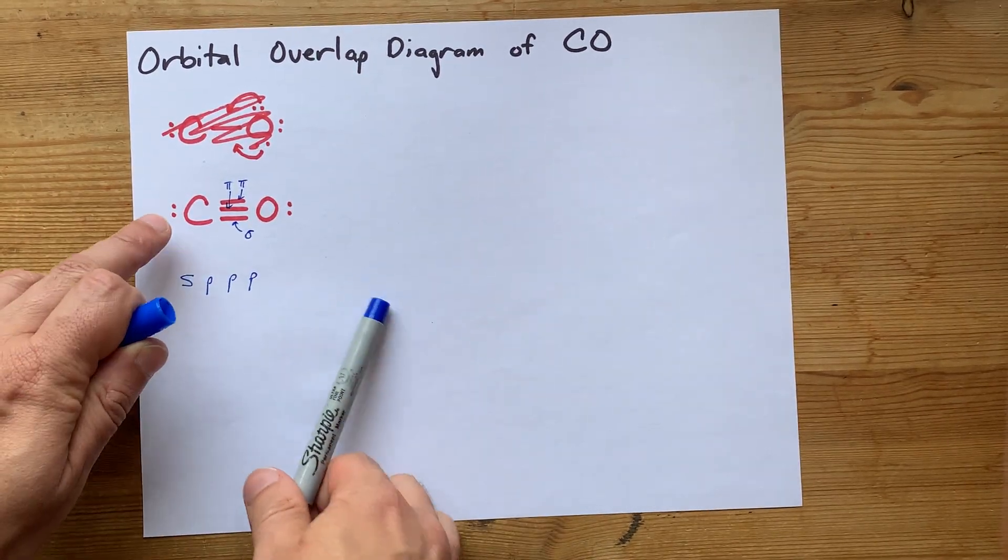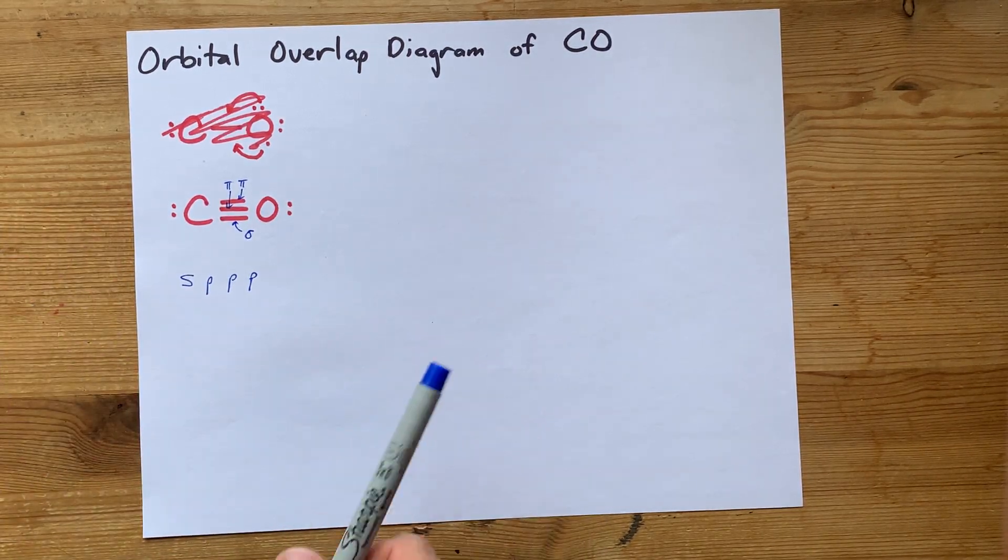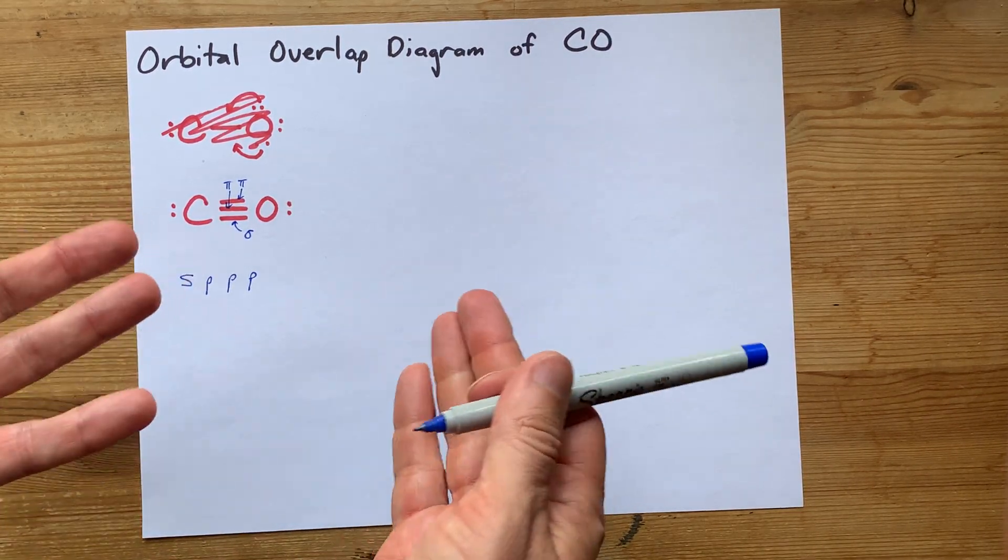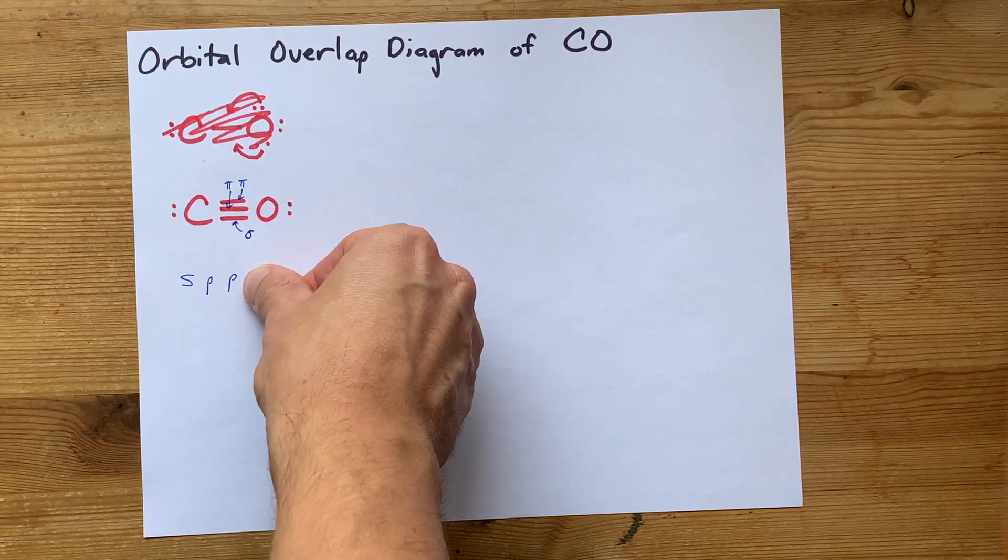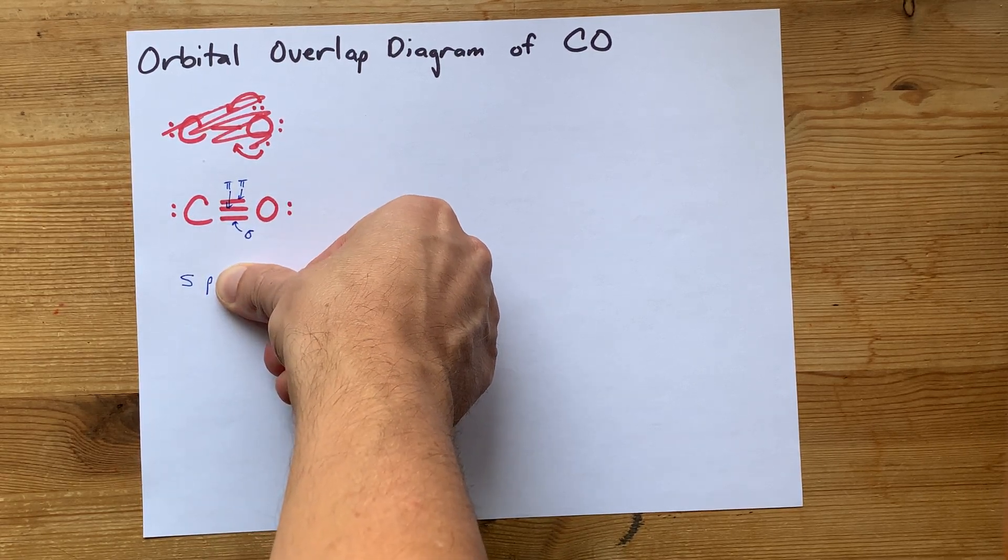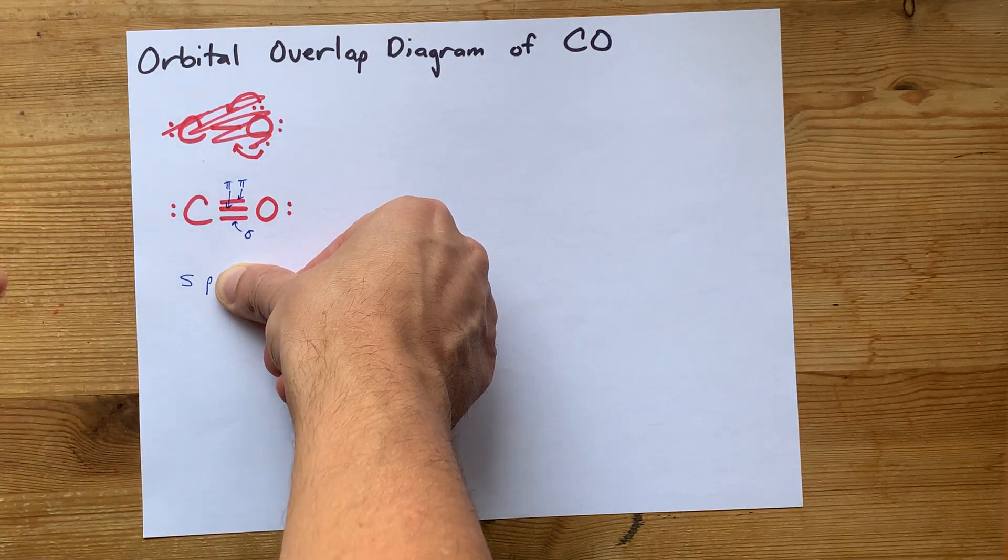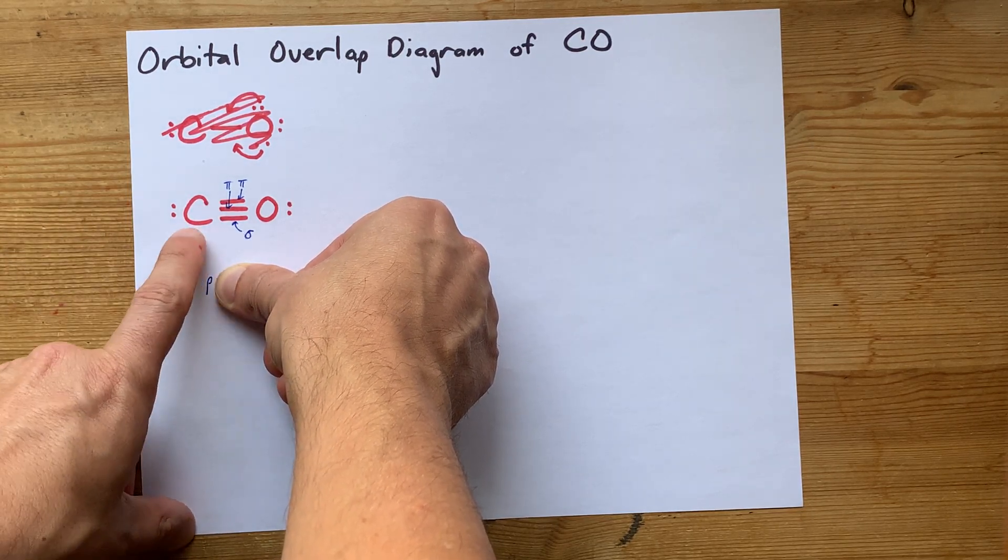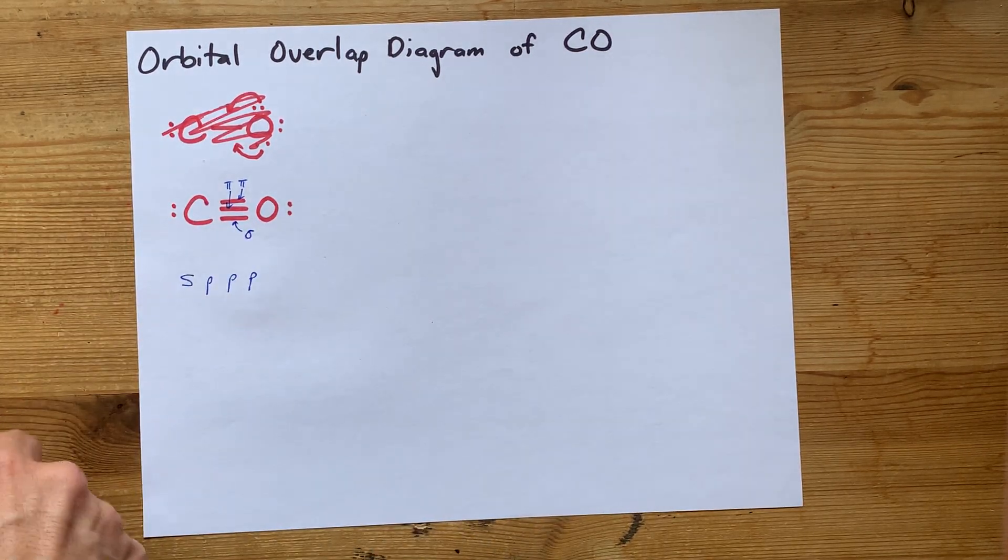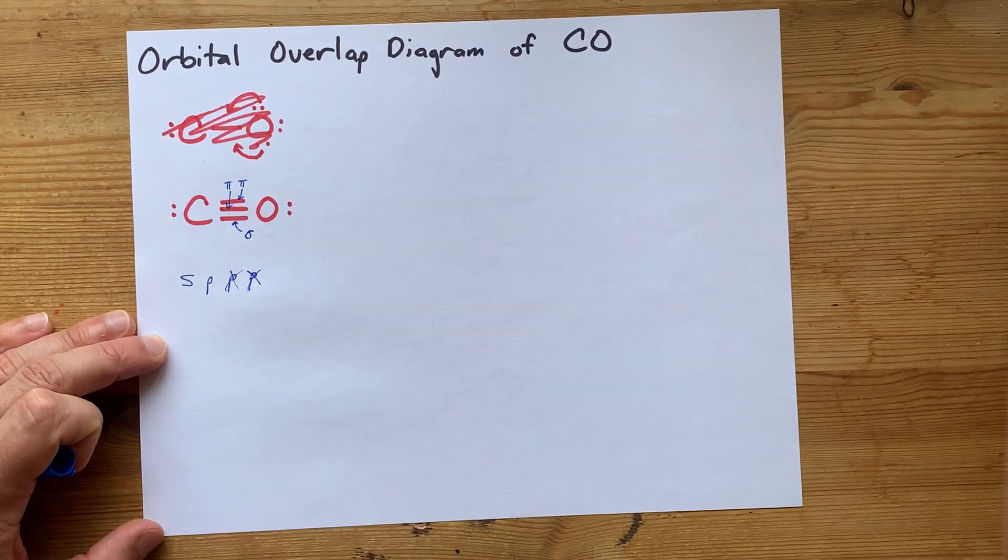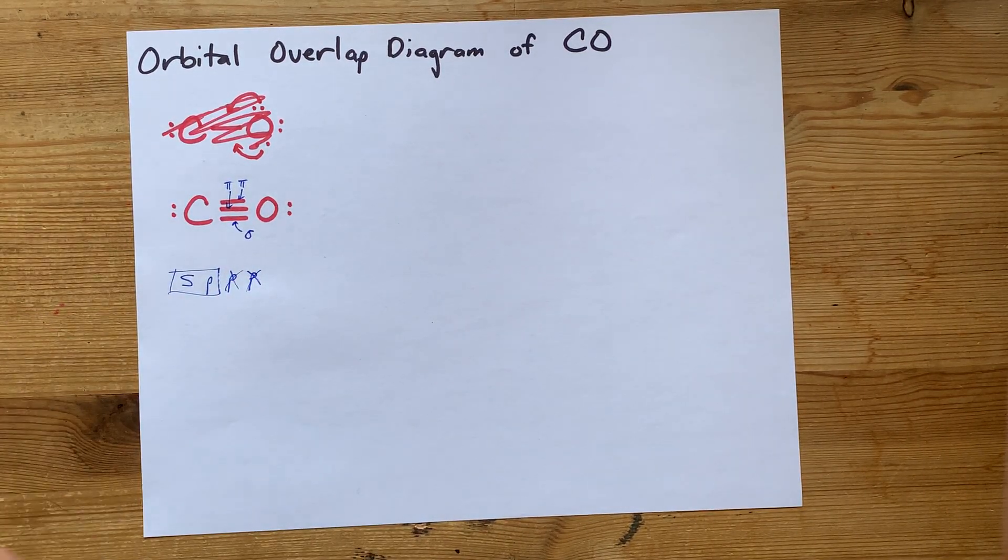We're in luck that carbon and oxygen both have two pi bonds attached to it. So they're the same hybridization. Two pi bonds require one, two P orbitals to be used up or set aside and not hybridized. Therefore, the hybridization of the carbon and oxygen is SP. One and two for the pi bonds. It's SP hybridized.